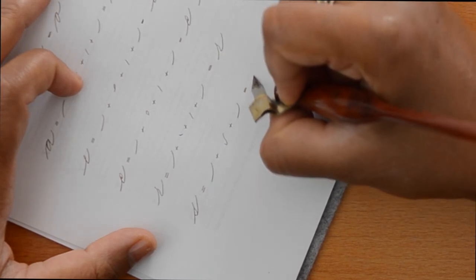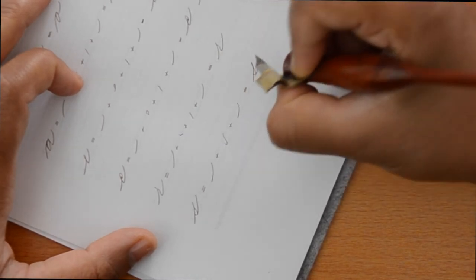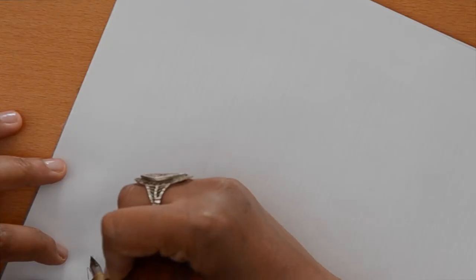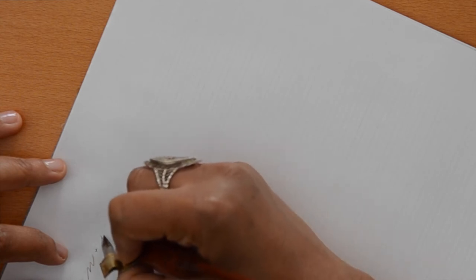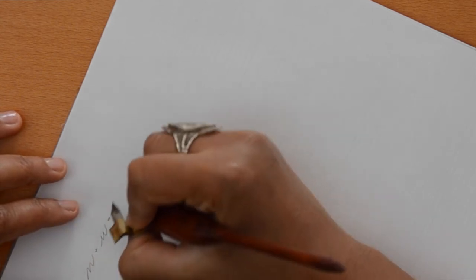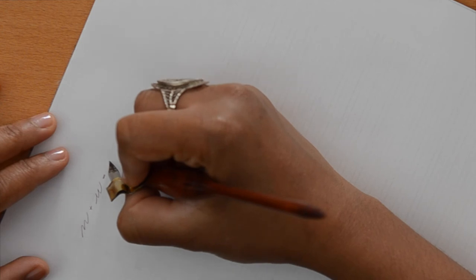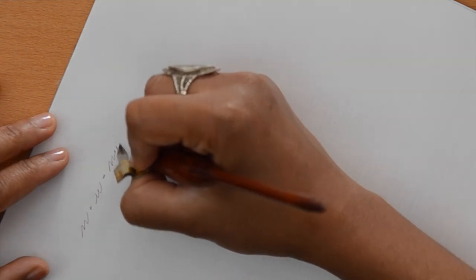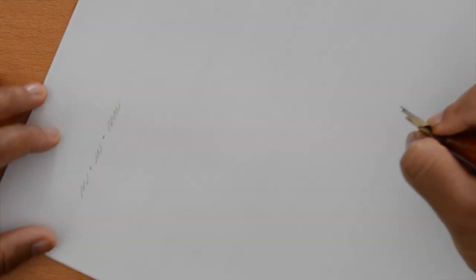Those are all of the short letters so now we're going to look at connecting them together. So let's look at the simplest case. With this N the exit stroke is a right curve and the entrance stroke of the U is also a right curve. So to connect them together is pretty simple.